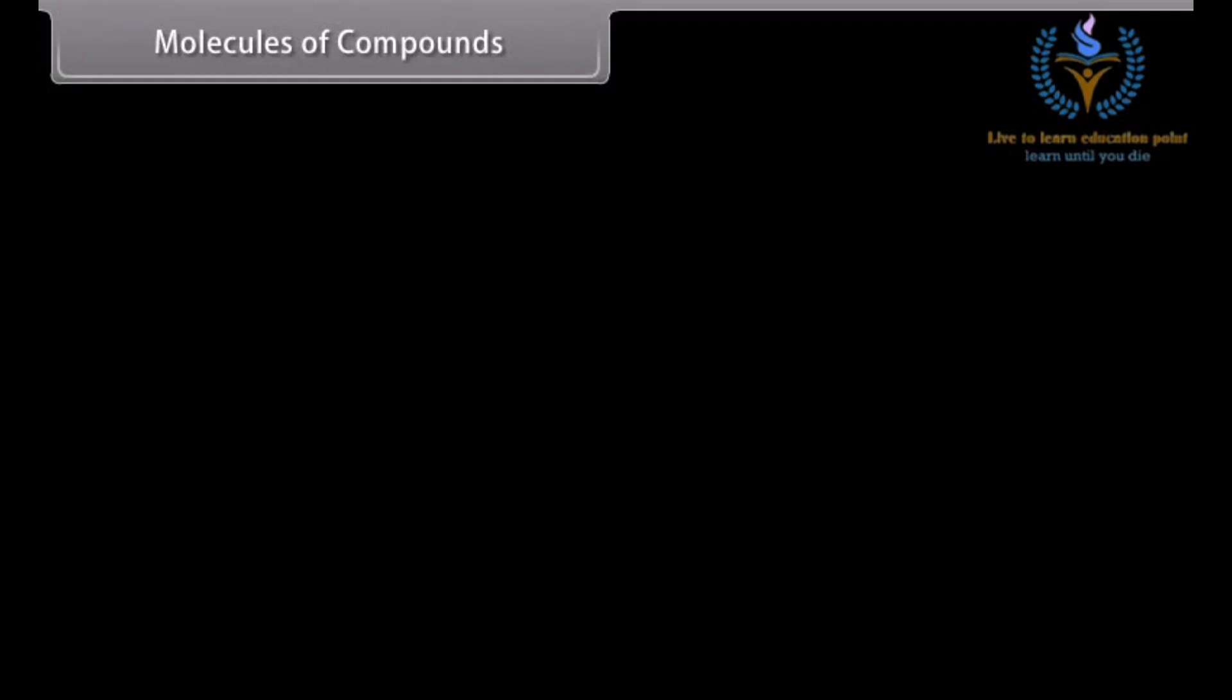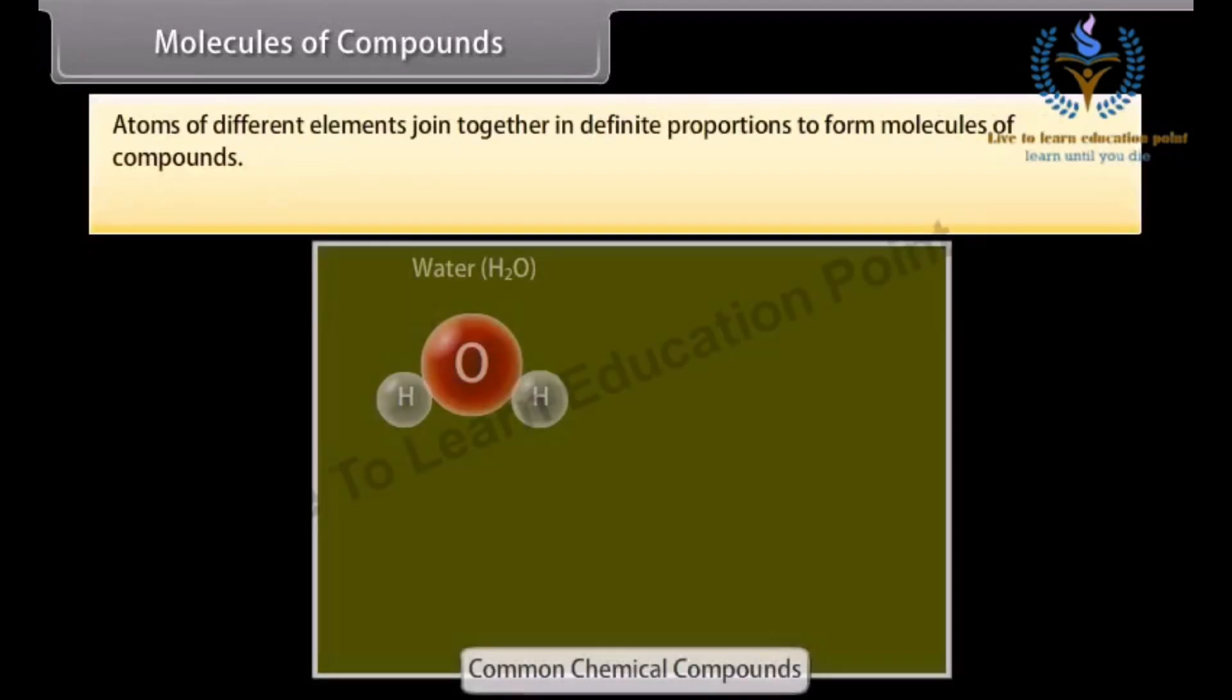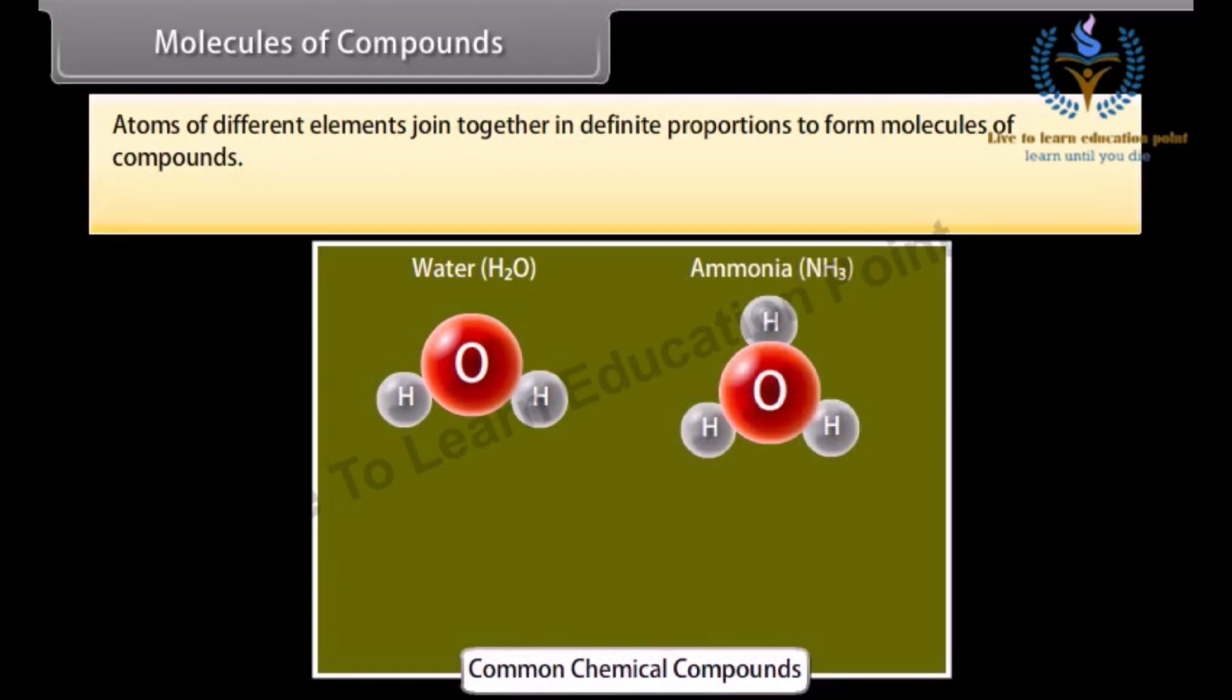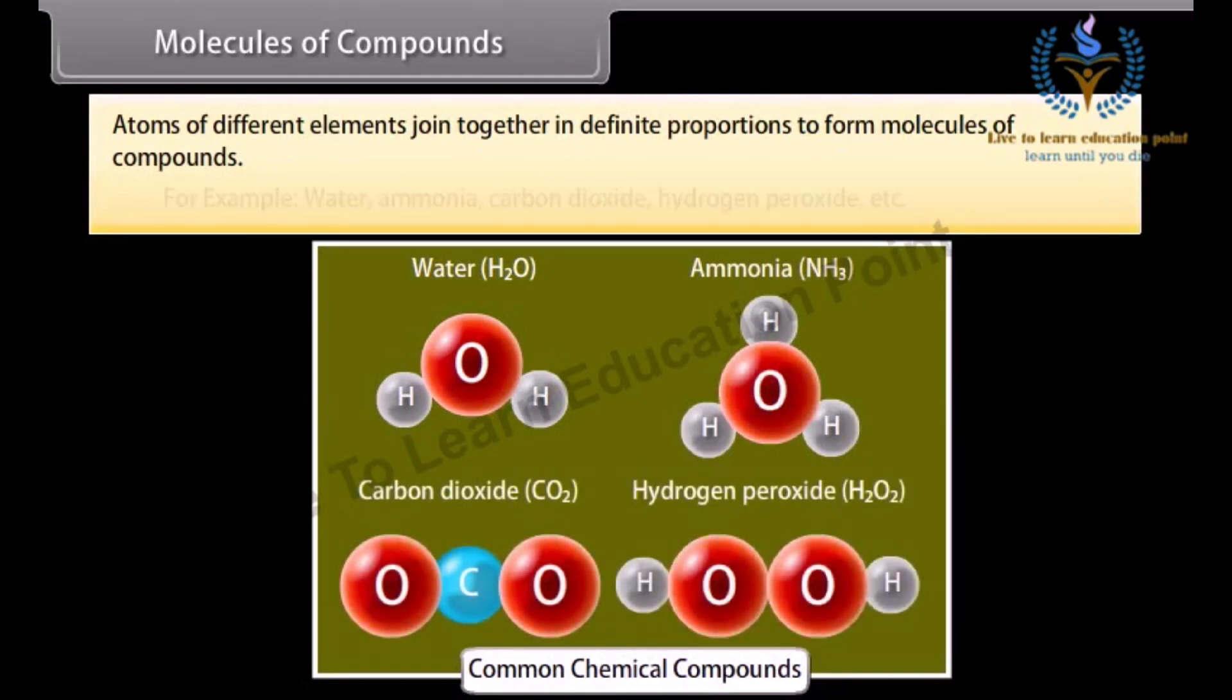Molecules of compounds. Atoms of different elements join together in definite proportions to form molecules of compounds. For example: water, ammonia, carbon dioxide, hydrogen peroxide, etc.